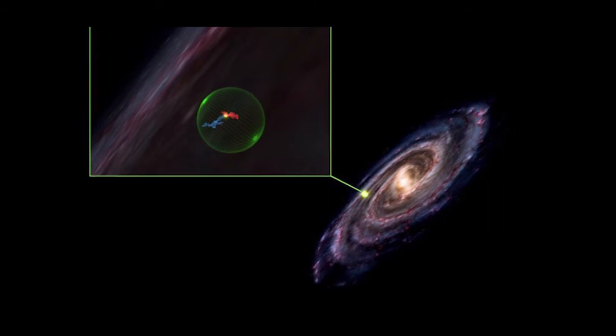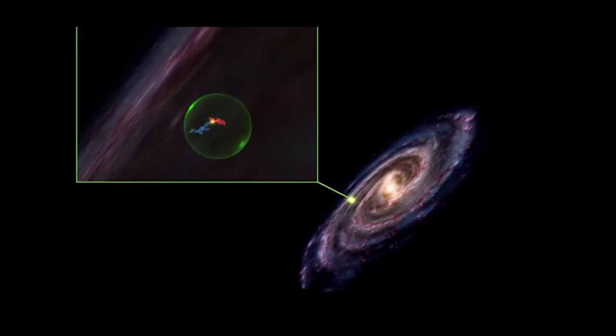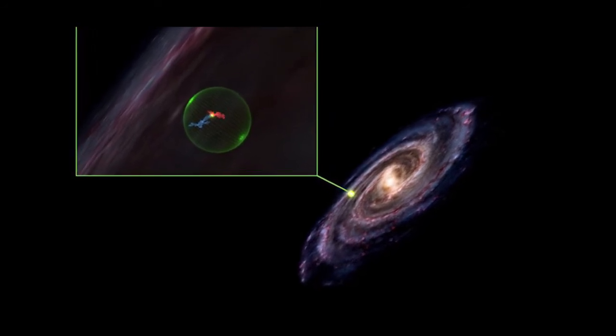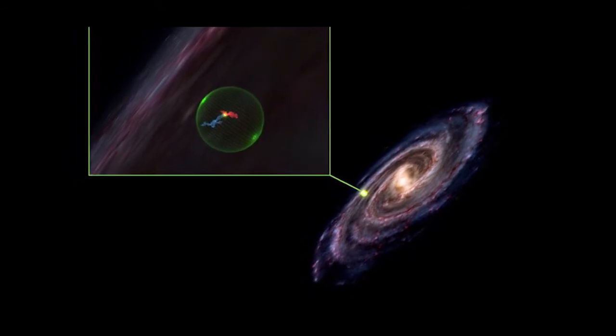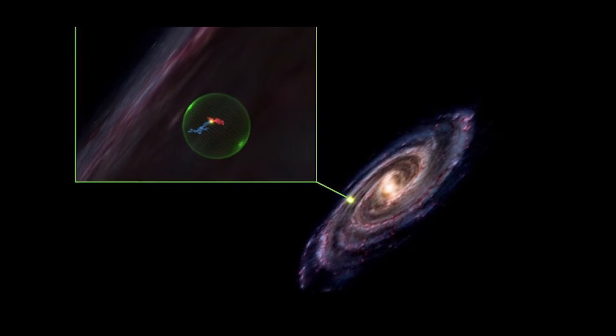New 3D maps of the region, courtesy of the European Space Agency's Gaia Space Observatory, show that these canoodling clouds are actually hundreds of light-years apart, separated by an enormous, empty orb entirely absent of gas, dust and stars.